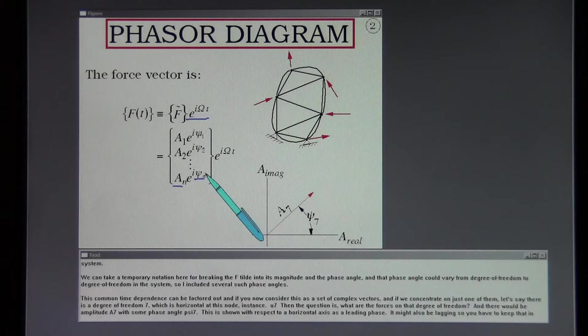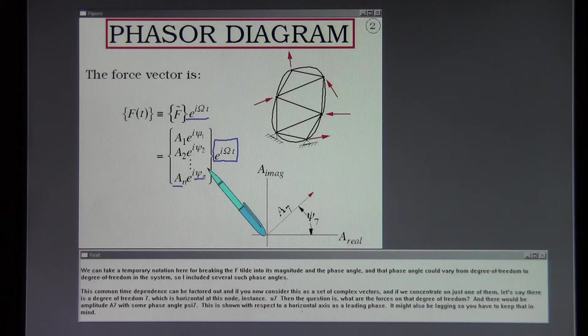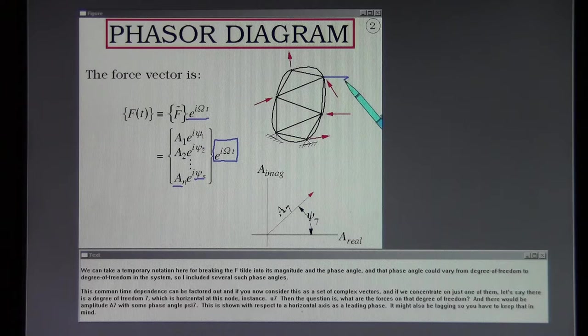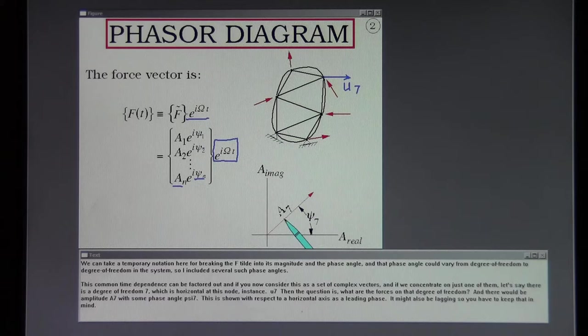And if you now consider this as a set of complex vectors and if we concentrate on just one of them let's say there's a degree of freedom 7 which is horizontal at this node. For instance U7. Then the question is what are the forces on that degree of freedom? And there would be an amplitude A7 with some phase angle psi 7. This is shown with respect to a horizontal axis as a leading phase. It might also be lagging so we have to keep that in mind.